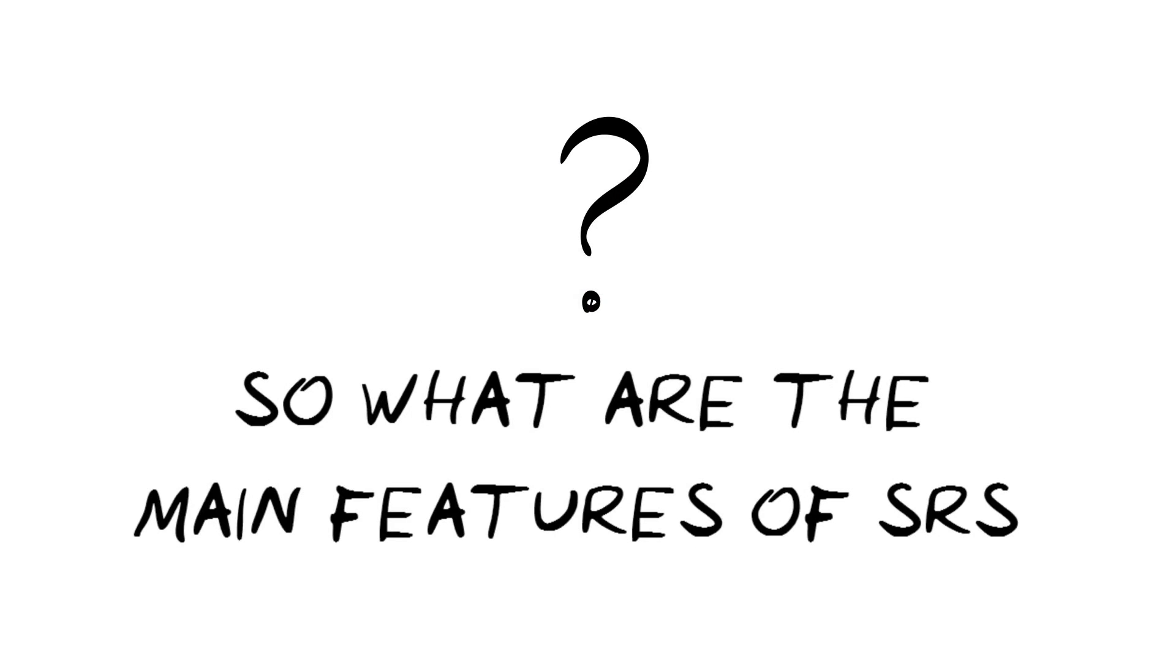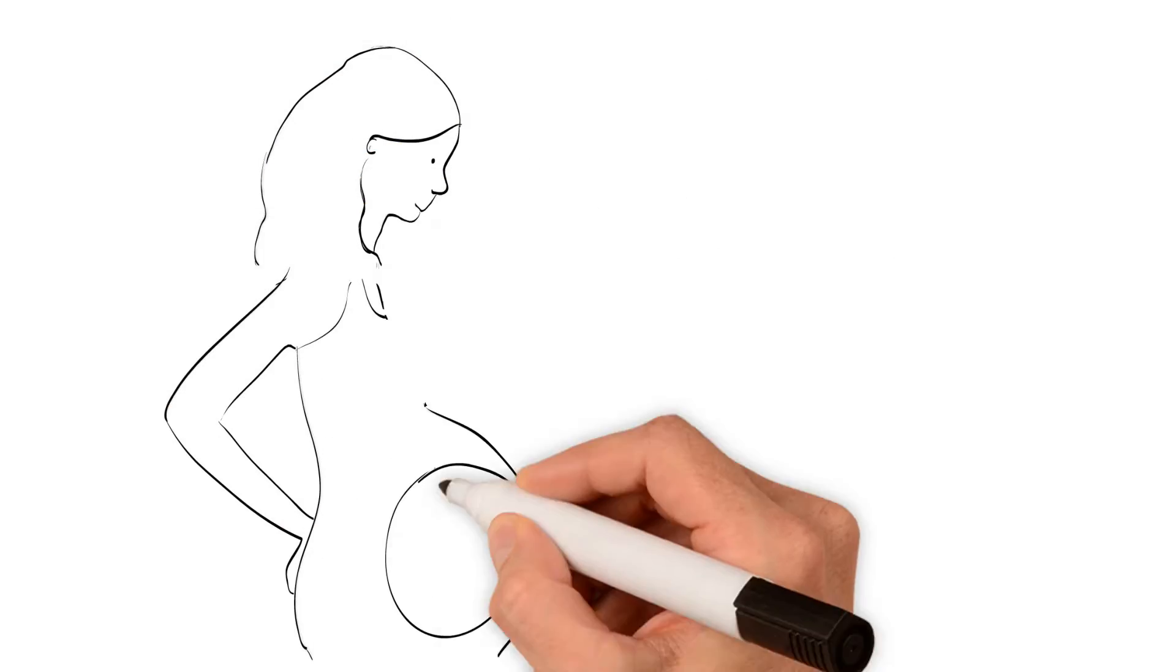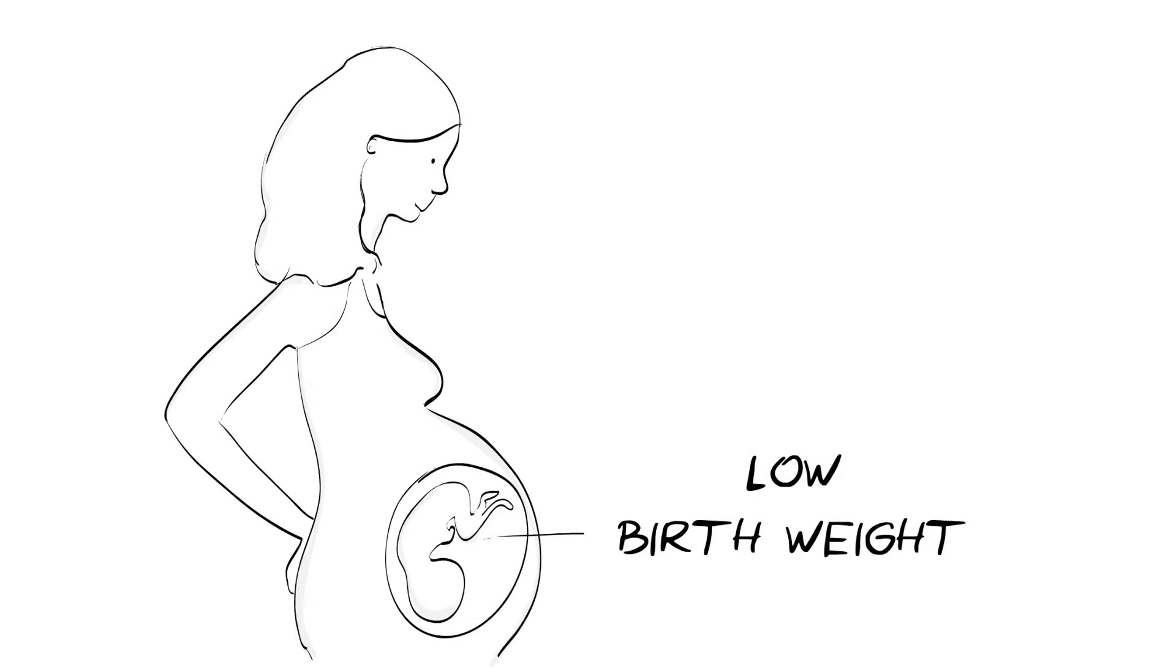So, what are the main features of SRS? Almost all affected children have slower growth in the womb and low birth weight compared to other babies.